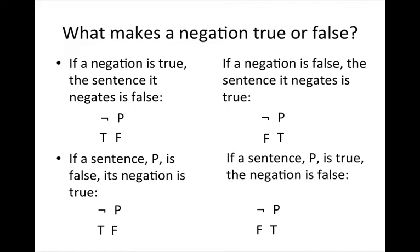First, let's review our truth definitions for the negation. What makes a negation true or false? Well, there are two ways we can approach this. First, if a negation is true, then the sentence that it negates, P, is false. Another way we can approach this is as follows: if a sentence P is false, its negation is true.